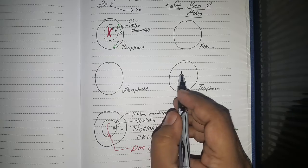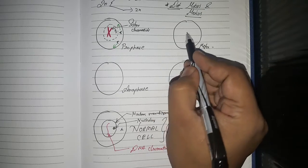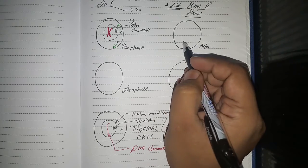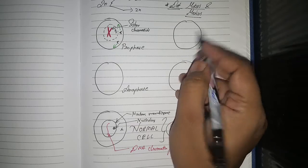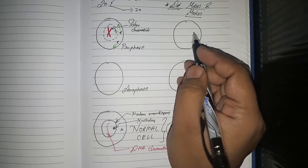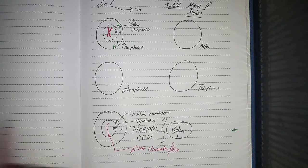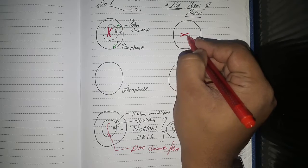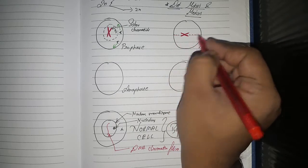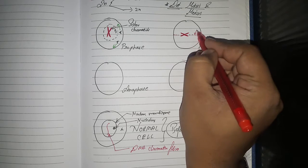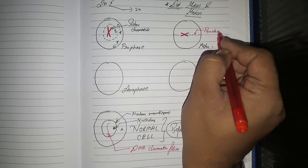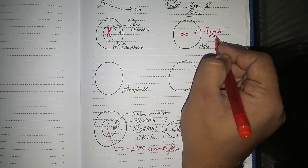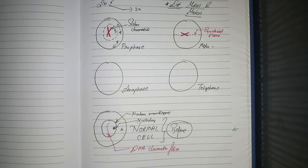In metaphase, the nuclear membrane is totally gone and the nucleolus is totally gone. The sister chromatids arrange themselves on the equatorial plane. This is important — the chromosomes become strikingly visible here. A practical-based question: in which stage can you count all the chromosomes perfectly? It's metaphase, because all chromosomes are clearly visible.